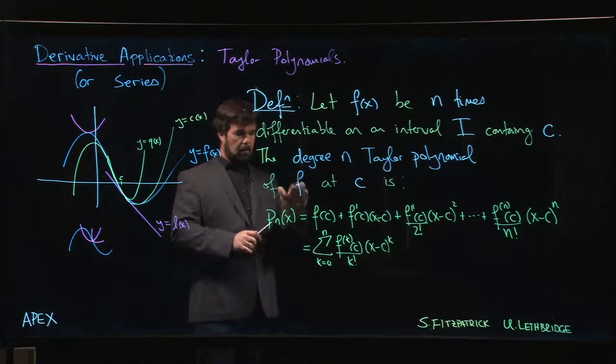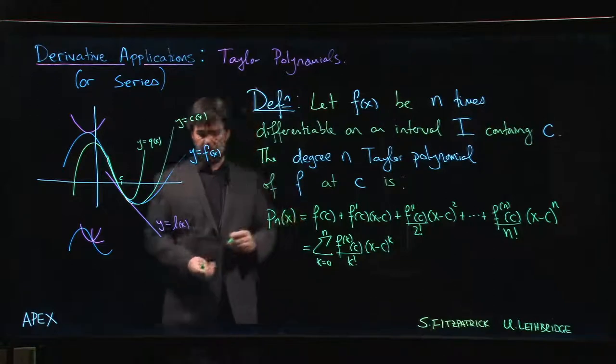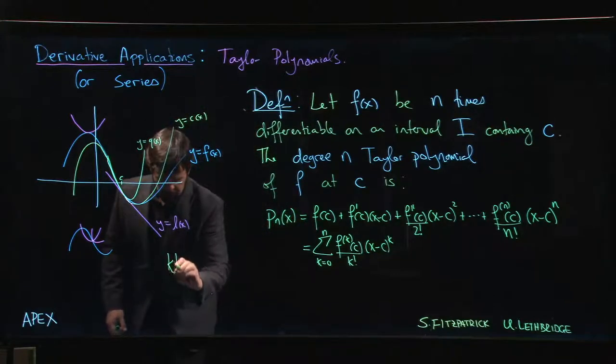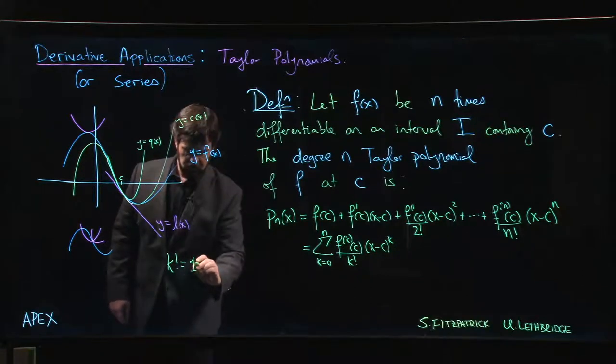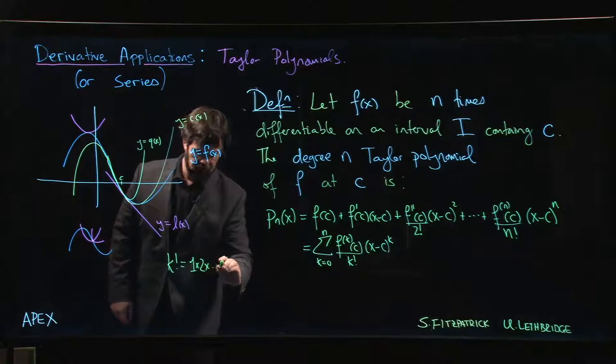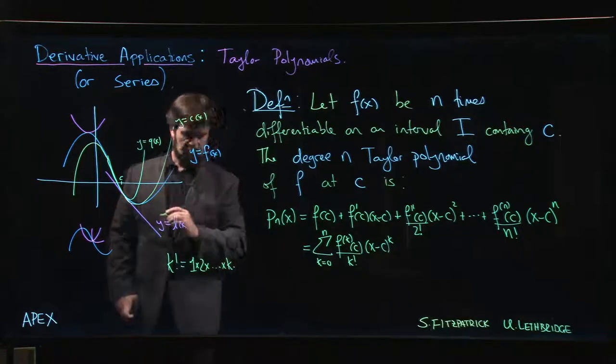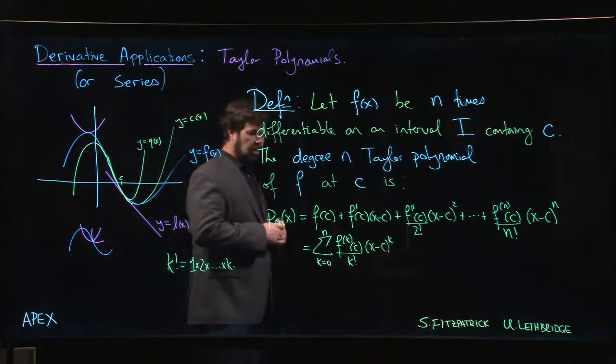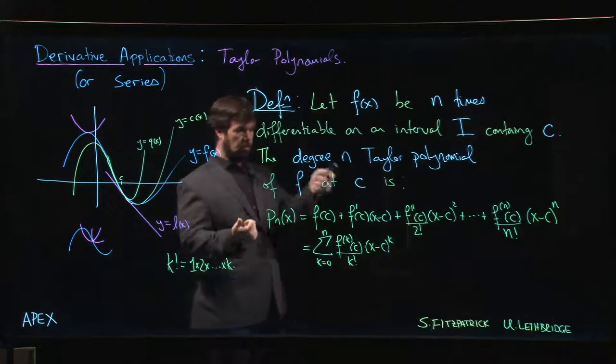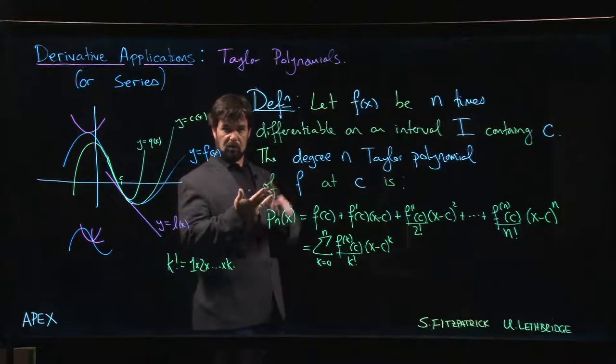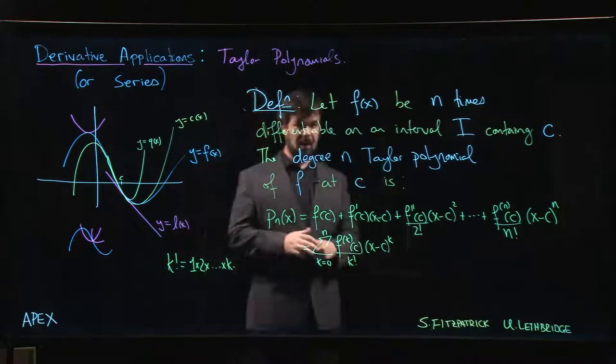k factorial - just as a reminder - is notation for the product of the first k integers. So 1 times 2 and so on up to k. 1 factorial is just 1, 2 factorial is 1 times 2 which is 2, 3 factorial is 1 times 2 times 3 which is 6.